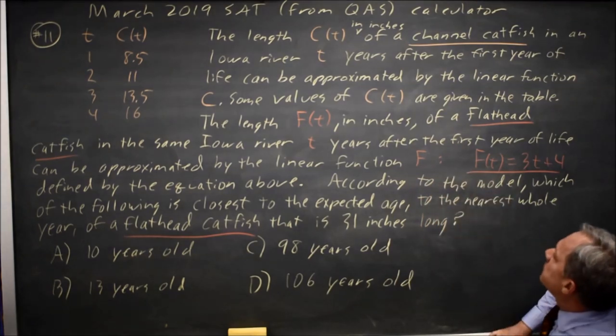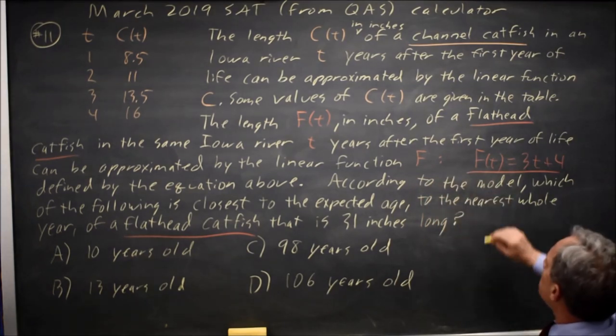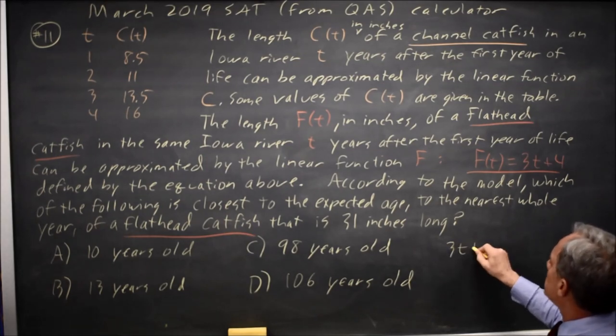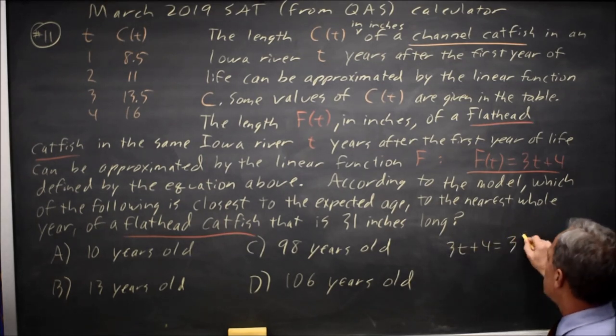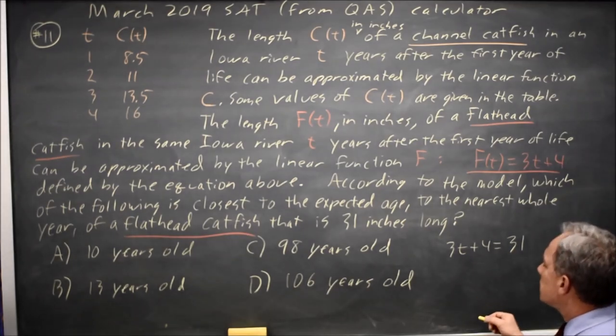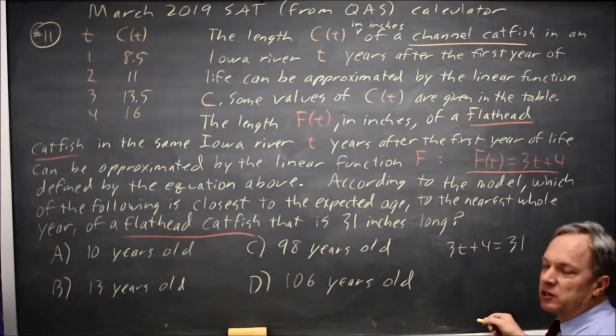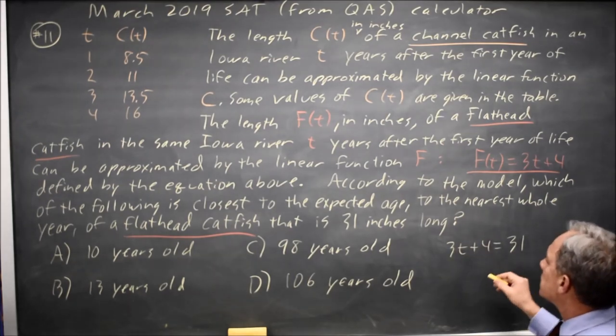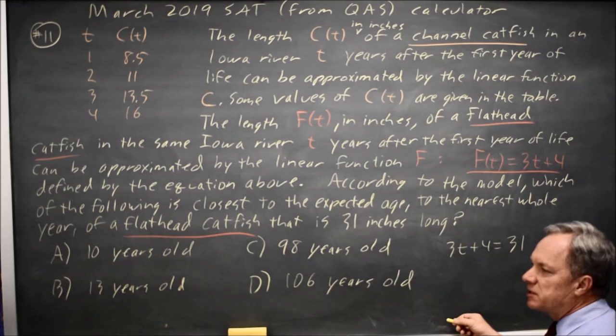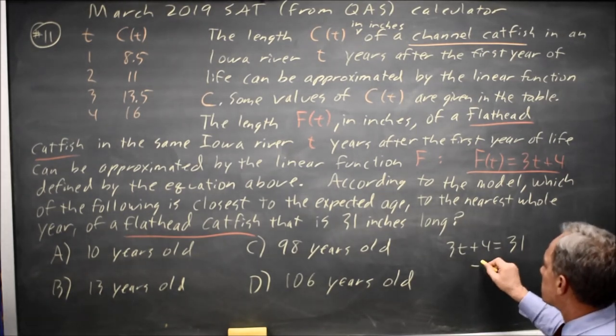And I want to know what is the age of the fish if f(t), which is 3t plus 4, is equal to 31. I can solve that algebraically or on the calculator, and I would probably use the calculator because once you get good at solving equations with one variable on the calculator, that's the easiest and fastest option. But I'm going to do it on the board also.